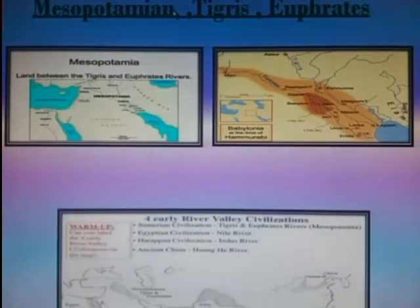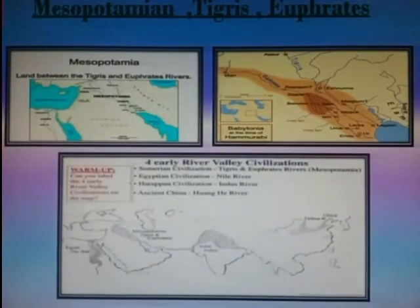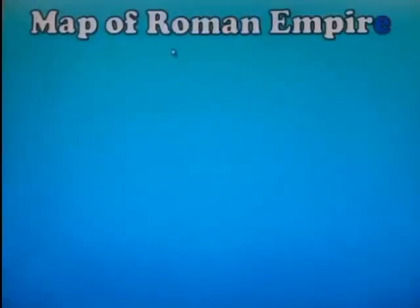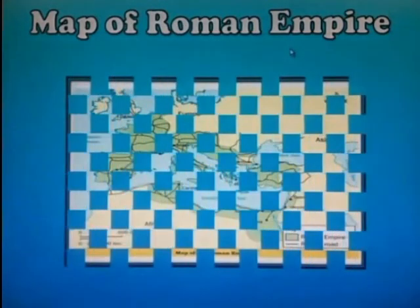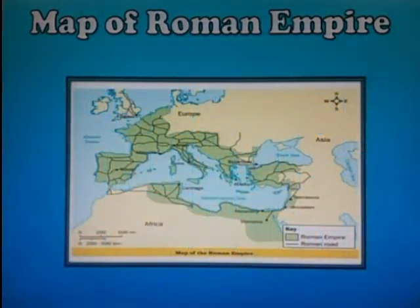In Europe, the Roman civilization grew near the river Tiber. The Mediterranean Sea route connected the ancient Roman Empire with other regions for trade. This is the map of the Roman Empire, referred to on page 3 of your book. You can develop your understanding using the given indications.